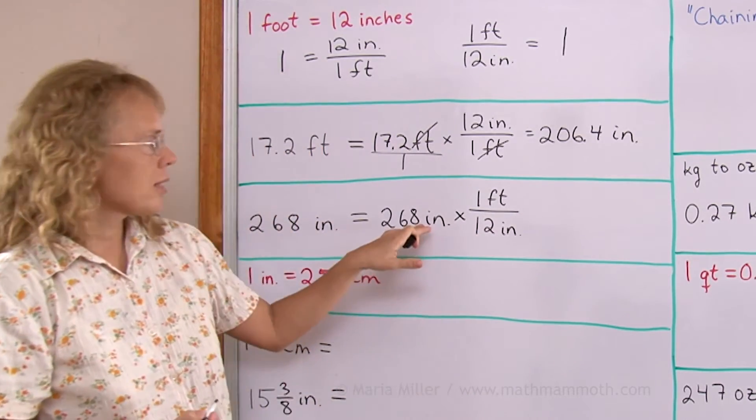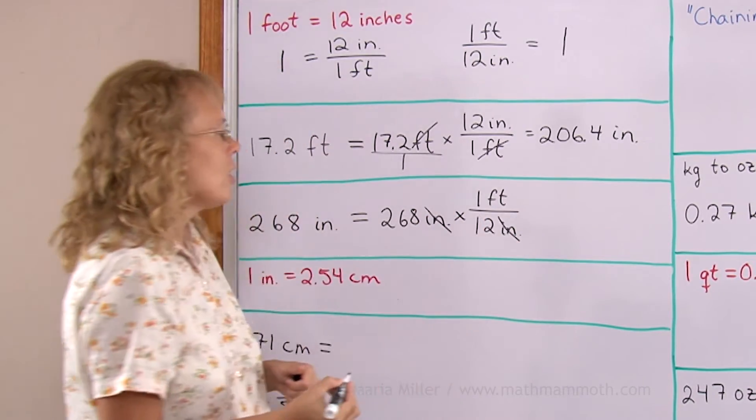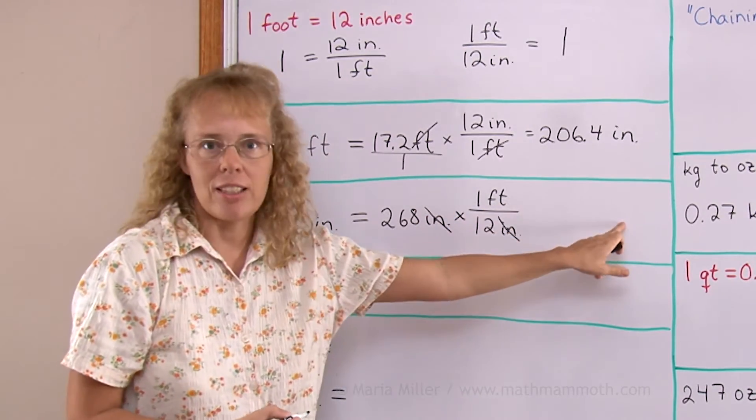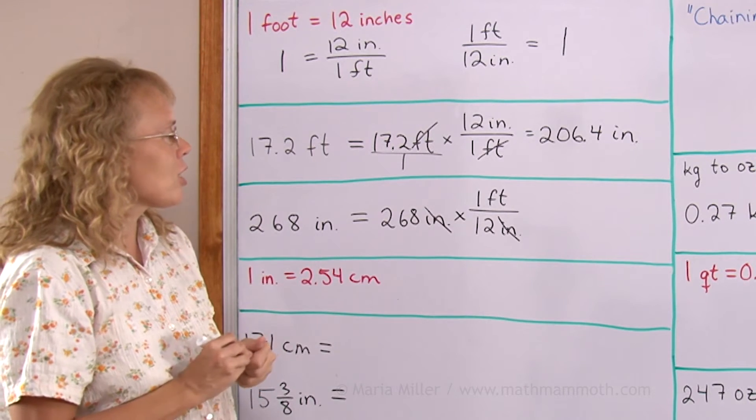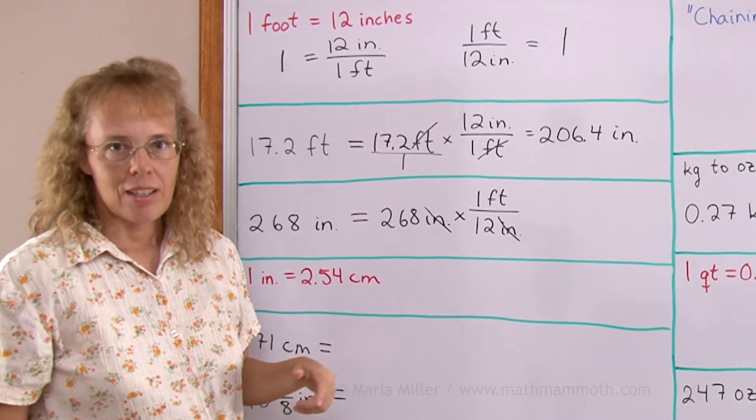And now what happens is the inches and inches, the units will cancel out. They are gone. So I will have feet as my final unit. And then the calculation here is 268 times 1 divided by 12.